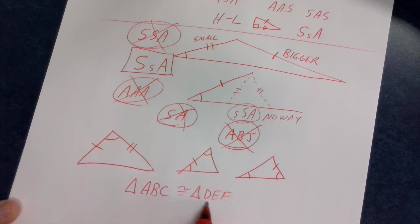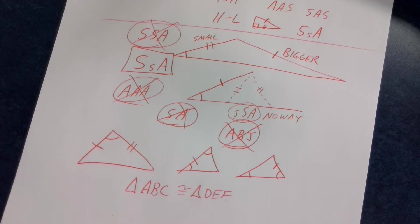and segment AB is congruent to segment DE, and segment BC is congruent to segment EF, and segment AC is congruent to segment DF. And that order matters on all of those things.